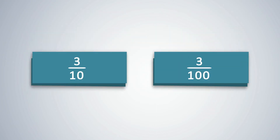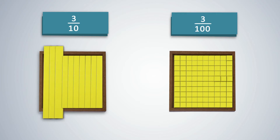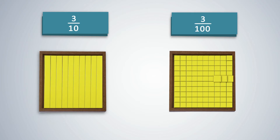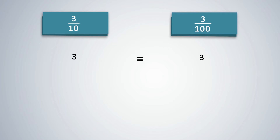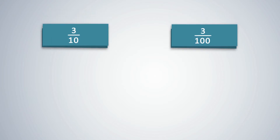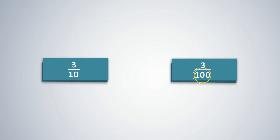Write the fractions 3 upon 10 and 3 upon 100 on the blackboard. The numerator in both fractions indicates the same number of parts. Are these fractions equal? Ask students to represent each fraction with the decimal set. It will be clear that 3 upon 10 is greater than 3 upon 100. Where the numerator is the same, the fraction with the greater denominator is the smaller fraction. The more the number of total parts, the smaller each portion becomes. Thus, 3 upon 10 is greater than 3 upon 100.